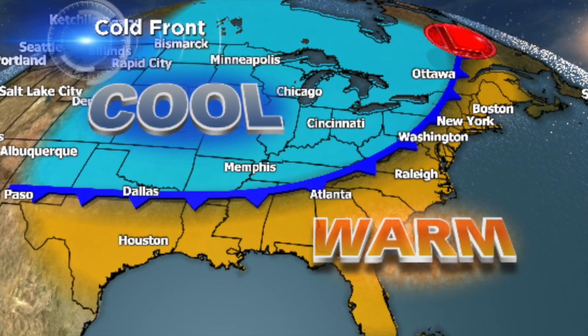As it rises, it cools. As it cools, sometimes it condenses enough to form clouds. If there's enough moisture in the air, it forms the possibility of showers and maybe thunderstorms with enough lift. That's why right along that transition that we call the cold front, oftentimes there are showers and storms.